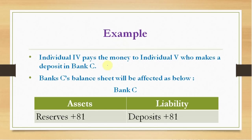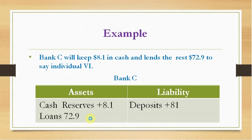Bank B extends a loan of $81 to any individual — say Individual 4. Individual 4 can withdraw the $81 from his loan account and deposit the amount in any bank. Suppose he deposits the money in Bank C. Bank C's liability will go up by $81 and its cash reserve will go up by $81. Following the same line of reasoning with a 10% cash reserve ratio, Bank C will give a loan of $72.9 to another individual.